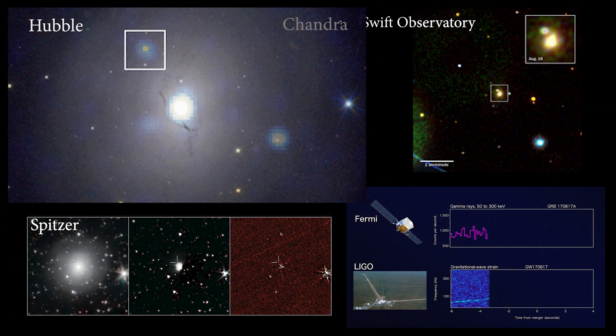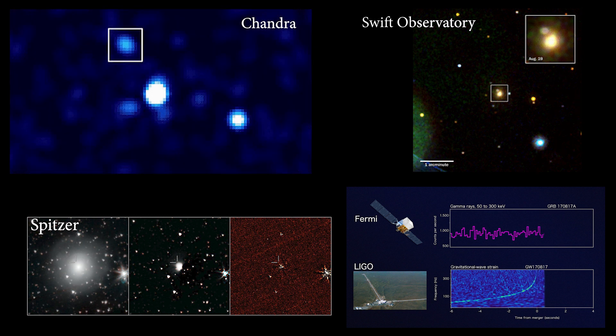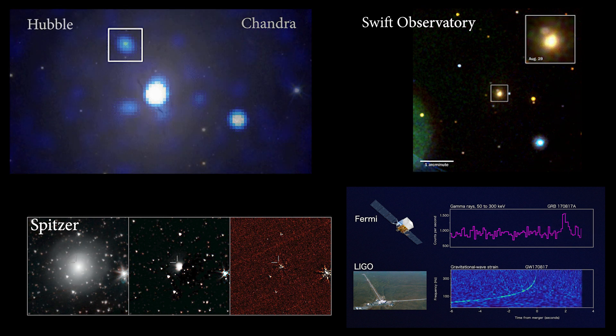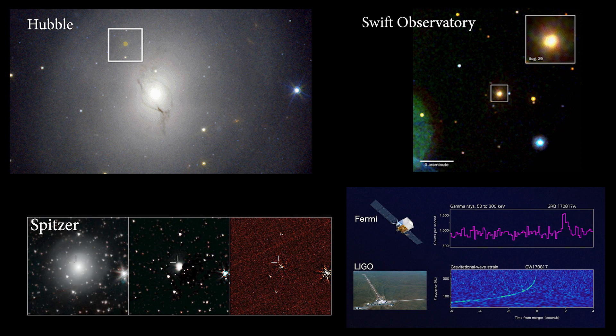A total of 70 observatories around the globe and in space collectively gathered data across the electromagnetic spectrum of the merger's aftermath.